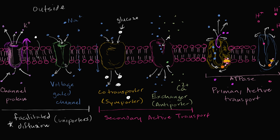Sometimes that tunnel is gated — it's only going to be open if a certain trigger is hit. We see that when we talk about signals going down a neuron: voltage-gated channels. Once the voltage hits a certain amount, the channel opens, and then the sodium that has a higher concentration outside can flow down its concentration gradient inside. But both of these are considered passive transport — facilitated diffusion — we're allowing things to flow down their concentration gradient.